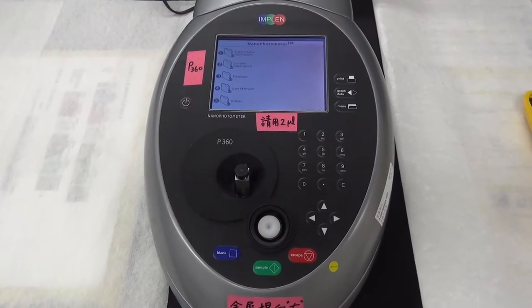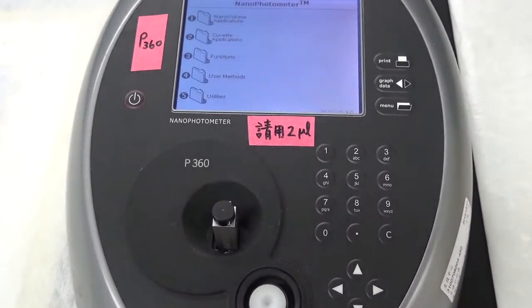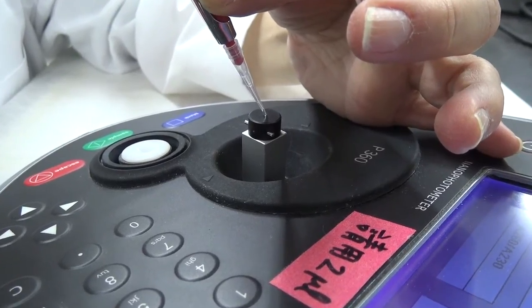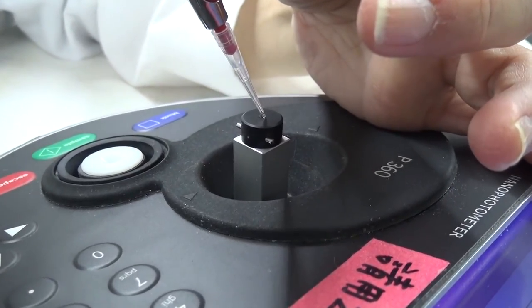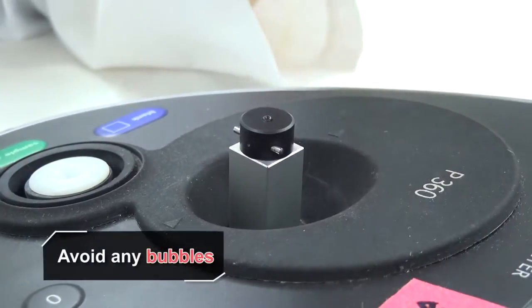5. Determine the sample volume to fit the size of cuvette. We use 2 microliter here as an example. 6. Pipet 2 microliter distilled water or blank solution into the sample well at the top of the cuvette. Avoid any bubbles.